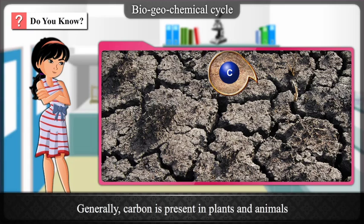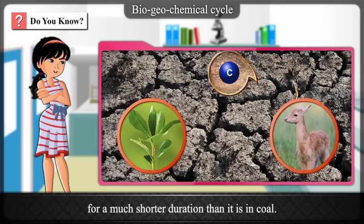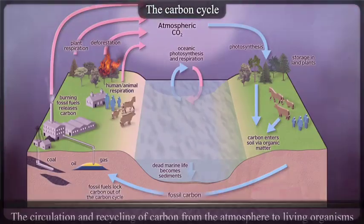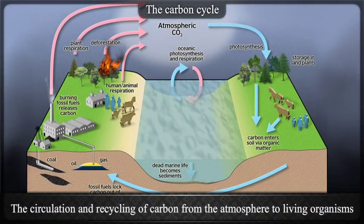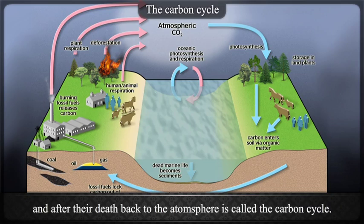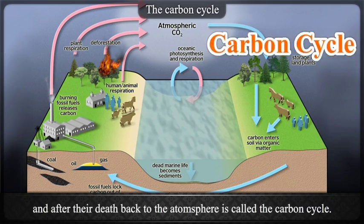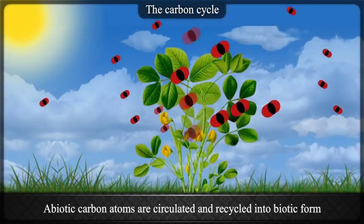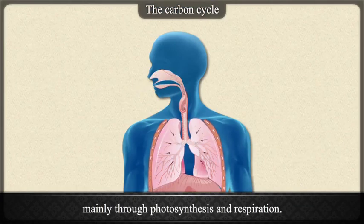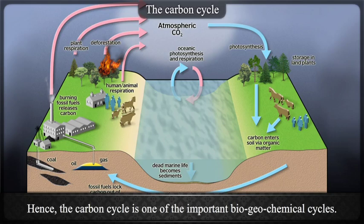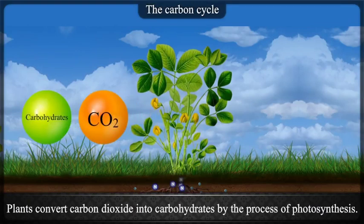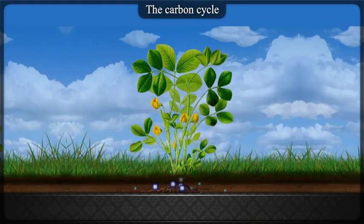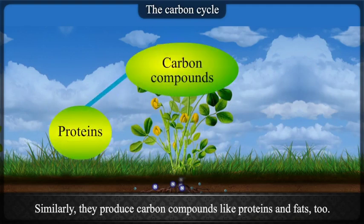Generally, carbon is present in plants and animals for a much shorter duration than it is in coal. The carbon cycle: The circulation and recycling of carbon from the atmosphere to living organisms and after their death back to the atmosphere is called the carbon cycle. Abiotic carbon atoms are circulated and recycled into biotic form mainly through photosynthesis and respiration. Hence, the carbon cycle is one of the important biogeochemical cycles. Plants convert carbon dioxide into carbohydrates by the process of photosynthesis, and also produce carbon compounds like proteins and fats.